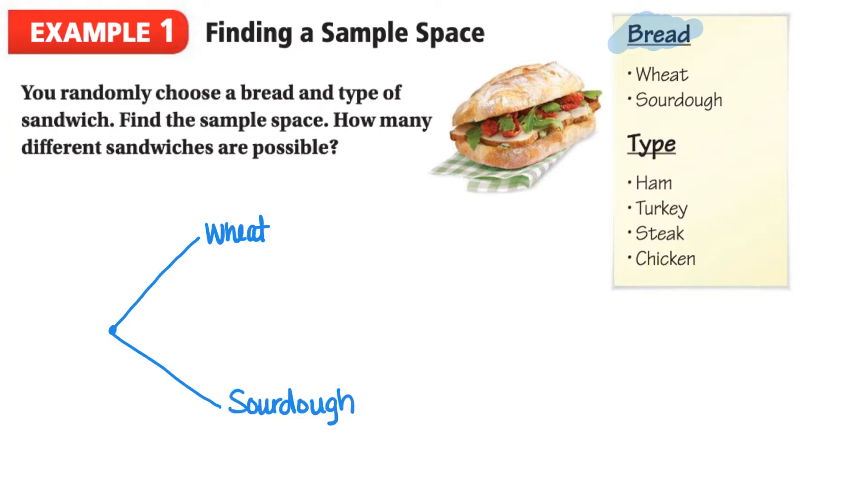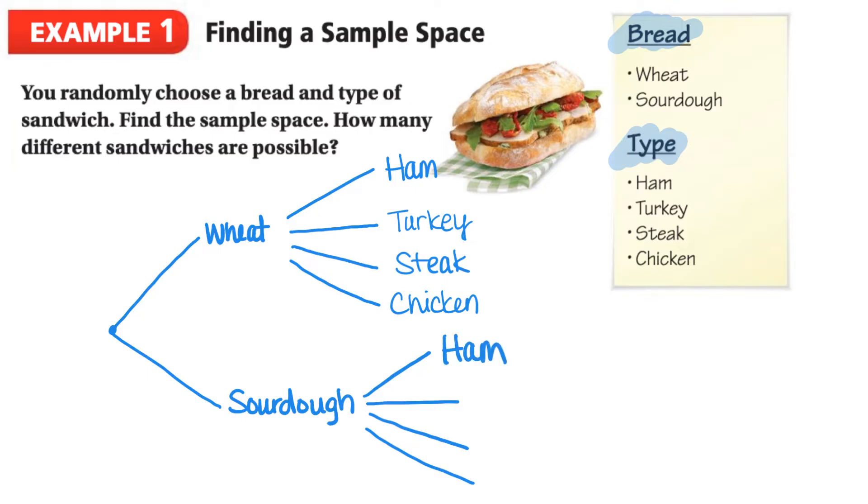After we choose the bread, we can randomly select ham, turkey, steak, or chicken. So if we chose wheat, we could then extend the branches for each type of sandwich: ham, turkey, steak, and chicken. And if we chose the sourdough, we would also extend the branches for each type of sandwich: ham, turkey, steak, and chicken.